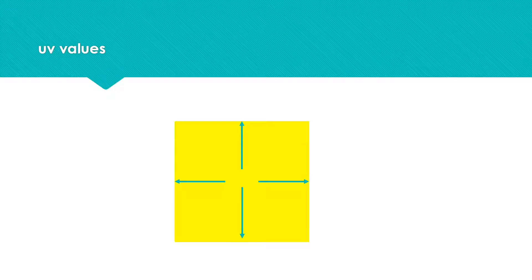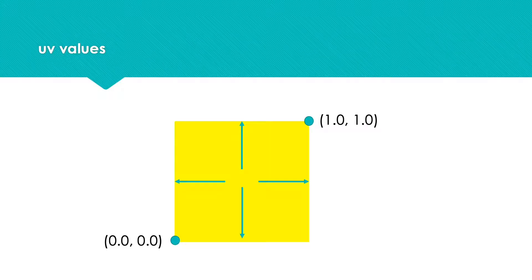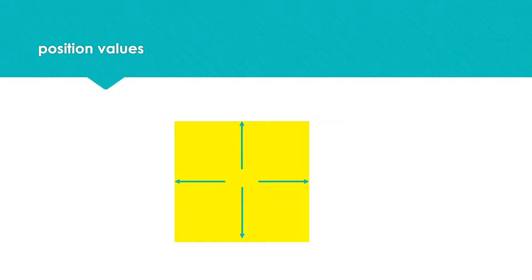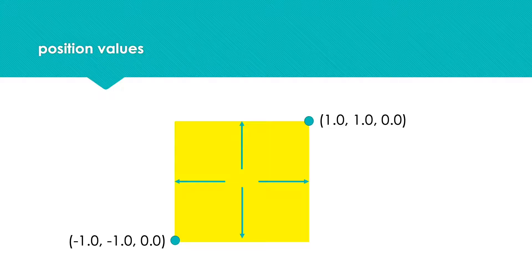Before we continue, we're going to switch our code to use the UV value for the plane rather than the position value. Recall that UV is zero at the lower left corner and one-one at the top right, whereas position is minus-one minus-one zero at the lower left and one-one zero at the top right. For the next example, it's better that the values are in the range zero to one rather than minus one to one.